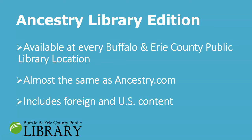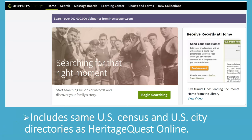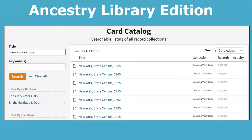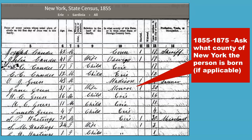Next on the tour is Ancestry Library Edition. It's almost the same as Ancestry.com and includes billions of records from all over the world. Ancestry Library Edition includes the same U.S. census records and the same U.S. city directories as Heritage Quest Online. Ancestry also provides access to New York State censuses, which were taken in addition to the federal censuses. The 1855 through 1875 New York State censuses offer specific counties of birth if the individual was born in New York State.